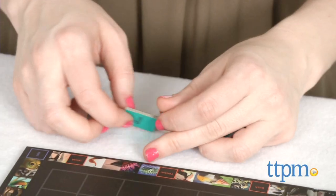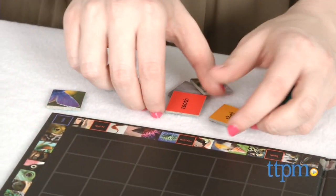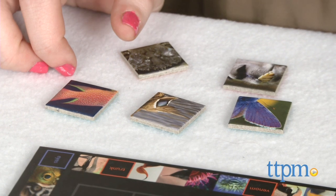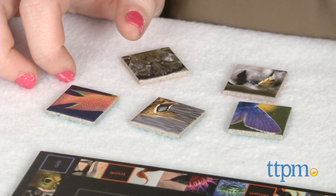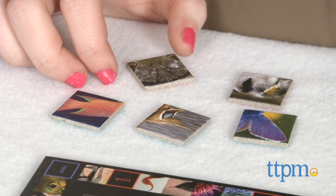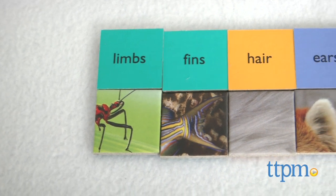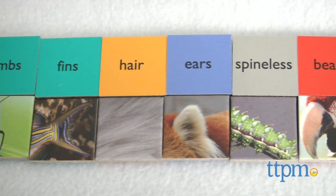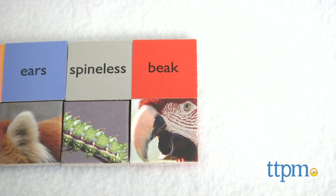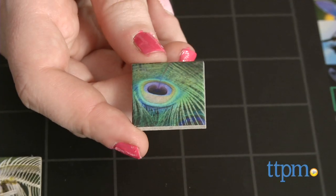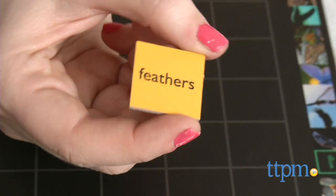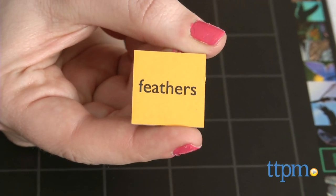But how does it play? Each player starts the game with seven tiles, and each game piece features two sides. One side offers up images of different anatomical pieces of animals, such as beak or teeth, wings, fins, shells, and more. The back side of each piece features the word corresponding to the image — such as peacock feather will say feather on the reverse side.